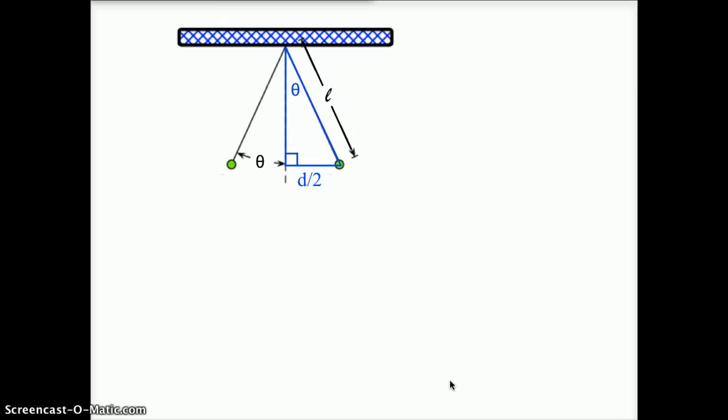So the first thing I want to do is figure out d, how far apart the charges are. We look at a little triangle we can make here with the length of string, a vertical line, and a horizontal line. The bottom is half of the distance between the charges, d divided by 2. The hypotenuse of the triangle is L. We've been given that value. And the angle up here is theta. We know that value. By SOHCAHTOA, sine of theta equals d over 2 divided by L. Plug in theta and L, and we figure out that d is 0.044 meters.